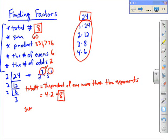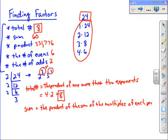Okay, the sum. Well, the sum is always equal to the product of the sum of the multiples. So this is very confusing. The product of the sum of the multiples of each prime. So what does that mean?